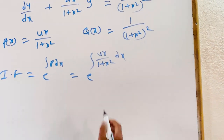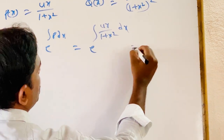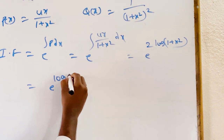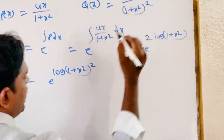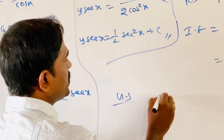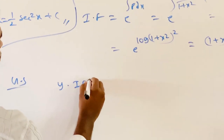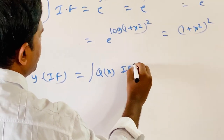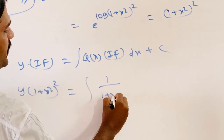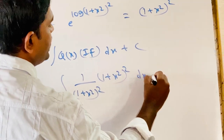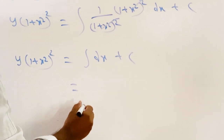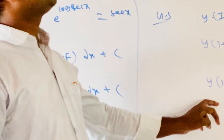Let t = 1 + x², then 2x dx = dt, so 4x dx = 2 dt. The integral becomes e^(2·log(1 + x²)), which is written as e^(log(1 + x²)²) using the rule m·log a = log aᵐ. So IF = (1 + x²)². The general solution: y·(1 + x²)² = ∫[1/(1 + x²)²]·(1 + x²)² dx + C. The (1 + x²)² terms cancel, giving y·(1 + x²)² = ∫dx + C = x + C. This is the general solution.